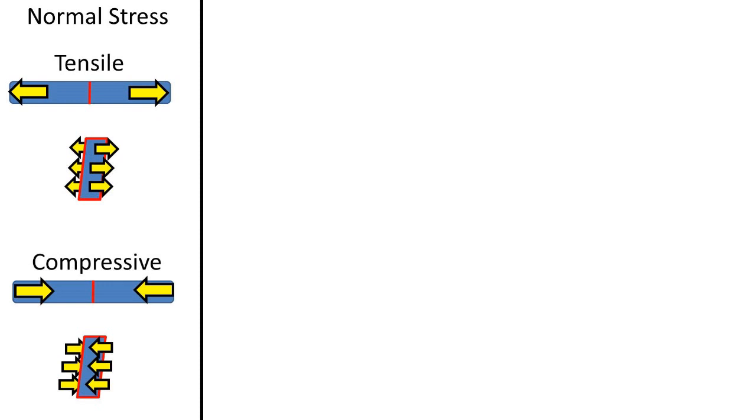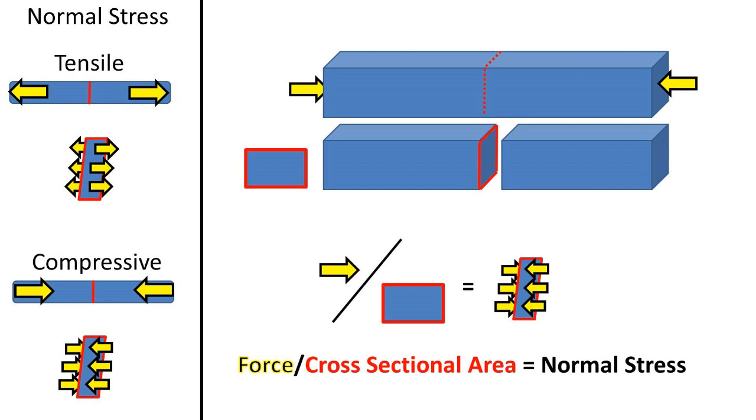Normal stress is when the force is acting on the object 90 degrees perpendicular to a cross-sectional plane. So if we take the force that is acting 90 degrees perpendicular to the cross-sectional plane and divide it by the area of the cross-sectional plane, we are left with a pressure, which is the normal stress.